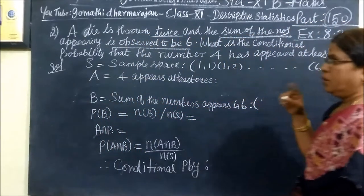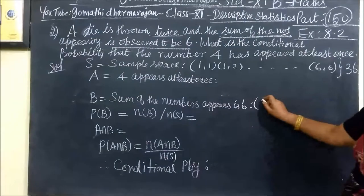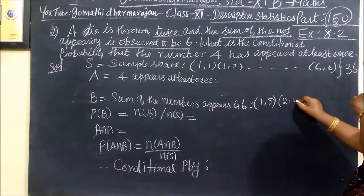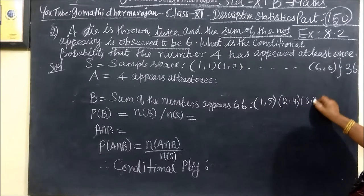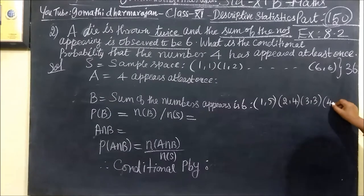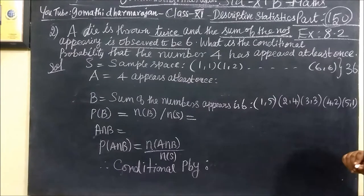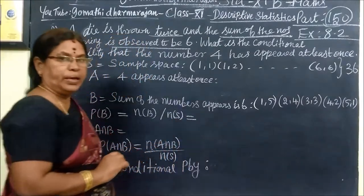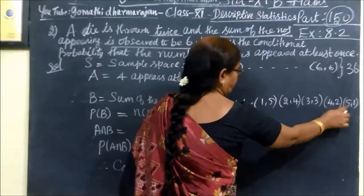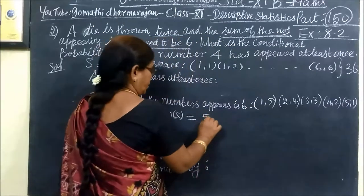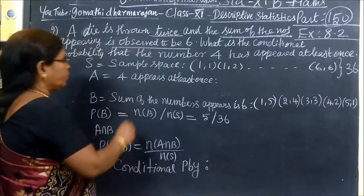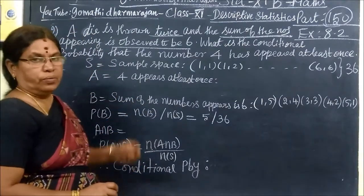1,5. 1,5 adds to 6. Then 2,4. Then 3,3. Then 4,2. Then 5,1. 1, 2, 3, 4, 5. Five outcomes. Five outcomes where the sum equals 6.